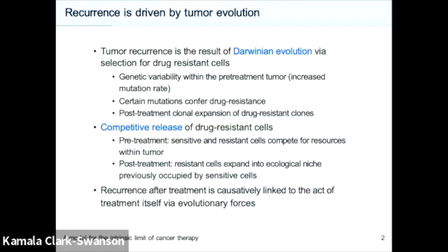The principle behind competitive release is that prior to treatment, the resistant phenotype is actually less fit — there are fitness costs associated with maintaining the mechanisms of resistance. Competition with the more fit drug-sensitive cells suppresses the drug-resistant population. But once we apply treatment and deplete the tumor of drug-sensitive cells, the drug-resistant cells are able to expand into the ecological niche previously occupied by those drug-sensitive cells.